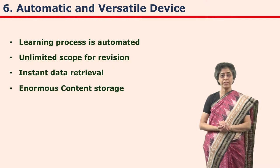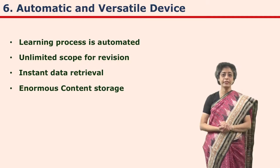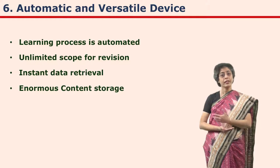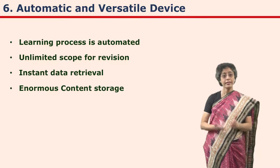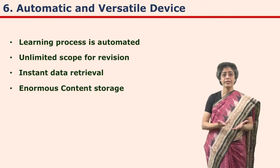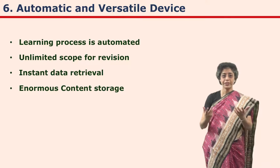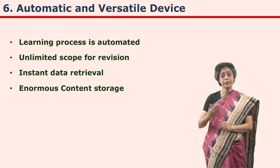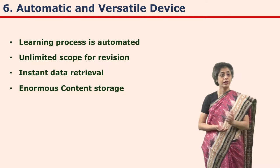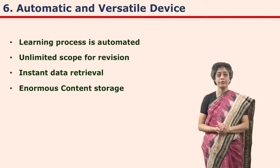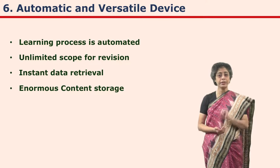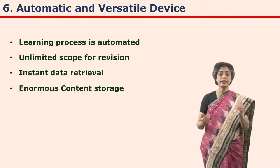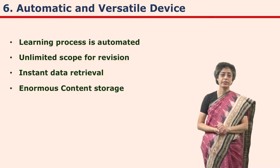The computer is an automatic machine, and that is why the entire learning process is automated in CI. The computer also has enormous data storage capacity — information can be processed, stored, and retrieved. This characteristic of the computer helps make CI very effective. Learners can retrieve information whenever needed, and a lot of content can be stored in one CI package. The learner is guided through the entire sequence automatically, and the computer is also a versatile medium that can present various media and process many question-answer interactions.